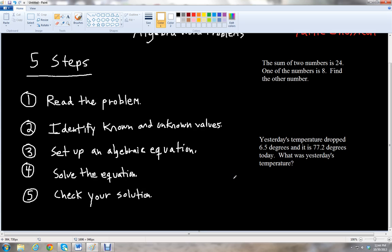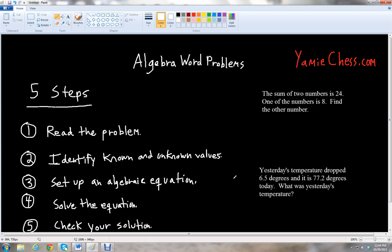So, those are the five important steps to solving algebra word problems. Let's look at a couple examples we have here over to the side. The first problem says the sum of two numbers is 24. One of the numbers is 8. Find the other number.